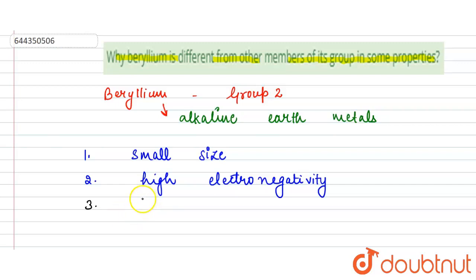And the third reason is high ionization energy. High ionization energy. And the fourth is our high polarizing power. High polarizing power. So these are the reasons that because of these reasons beryllium differs from the other members.